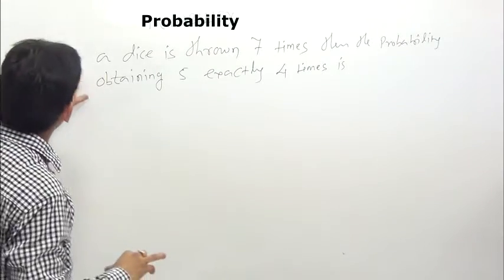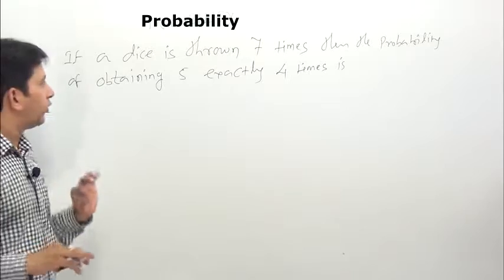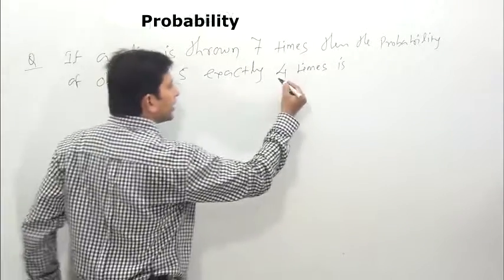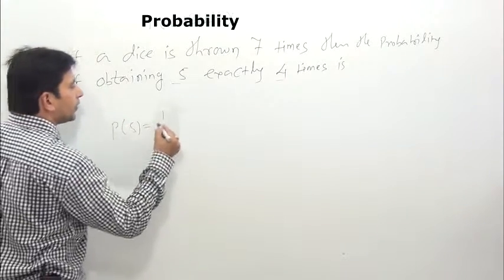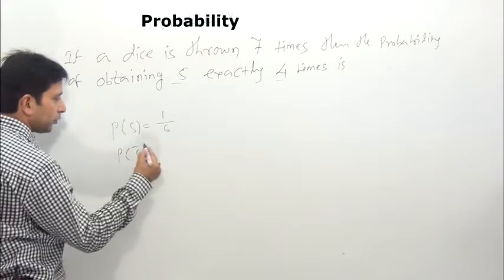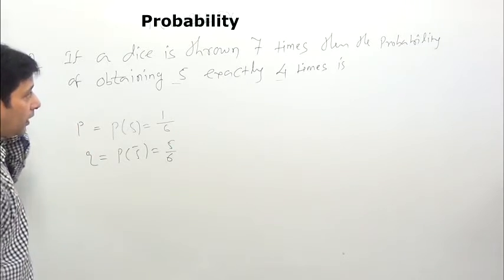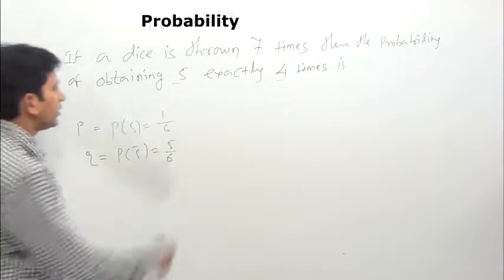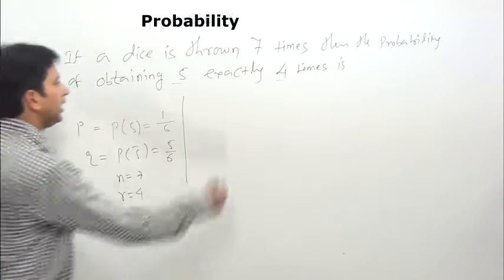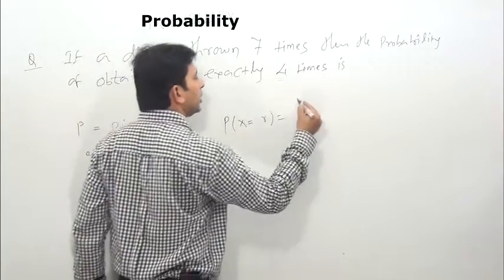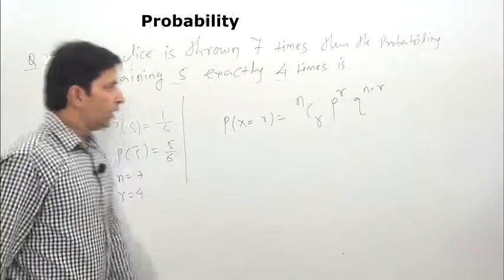Next question: if a dice is thrown 7 times, find the probability of obtaining 5 exactly 4 times. First, the probability of getting 5 in a single throw is p = 1/6, and the probability of not getting 5 is q = 5/6. We are throwing 7 times, so n = 7, and r = 4.